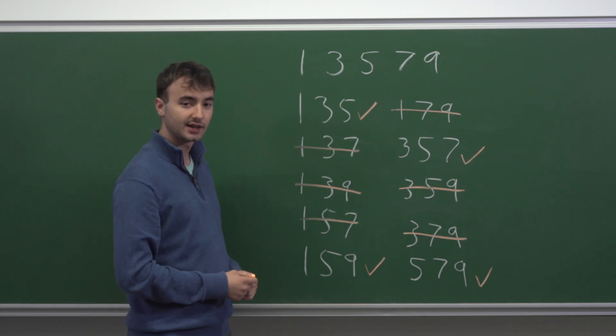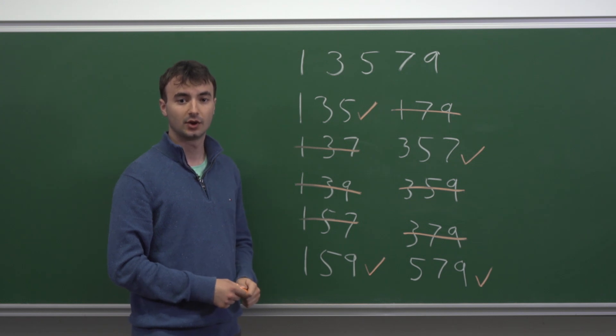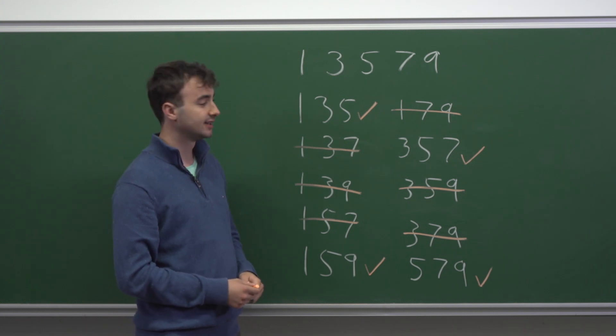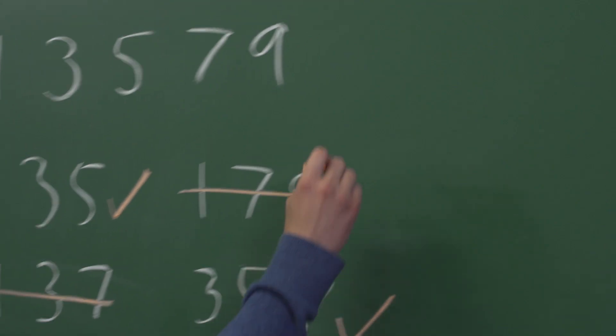So for each collection, there's six ways of arranging the digits, which means the final total answer is six times four, which is 24.